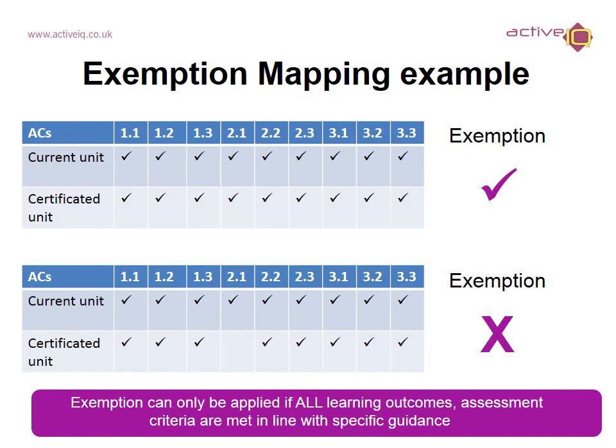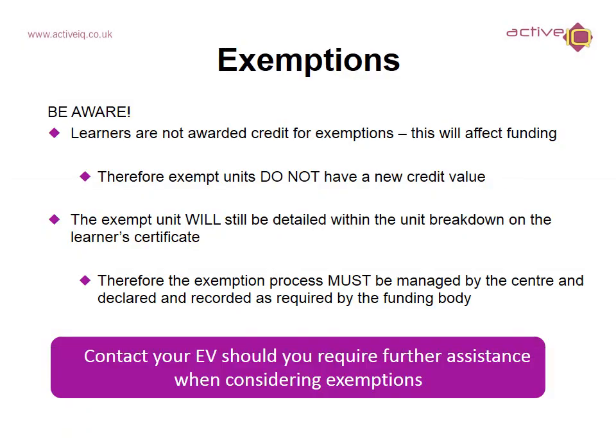Exemptions can only be applied if all of the outcomes and assessment criteria are met in line with specific guidance. Be aware: learners are not awarded credit for any exemptions, so this will have a direct effect on funding. Exempt units do not have a new credit value. The exempt unit will still be identified and detailed within the unit breakdown on the learner certificate. The exemption process must be managed by the centre and declared and recorded as required by the funding body, as learners will not receive any funding for any exemptions.